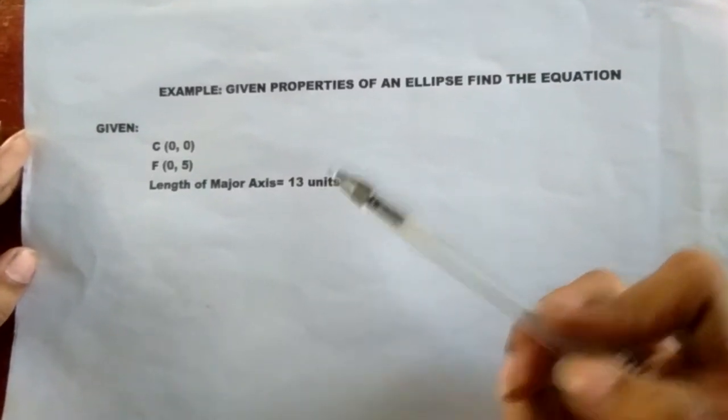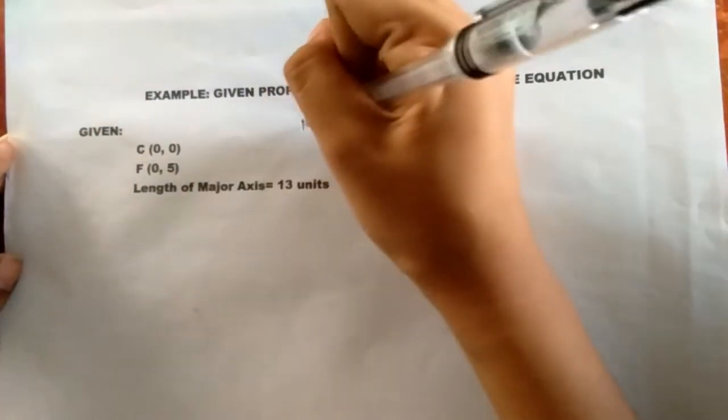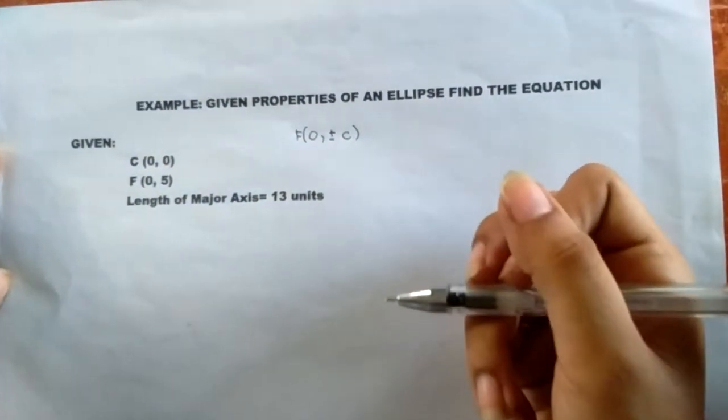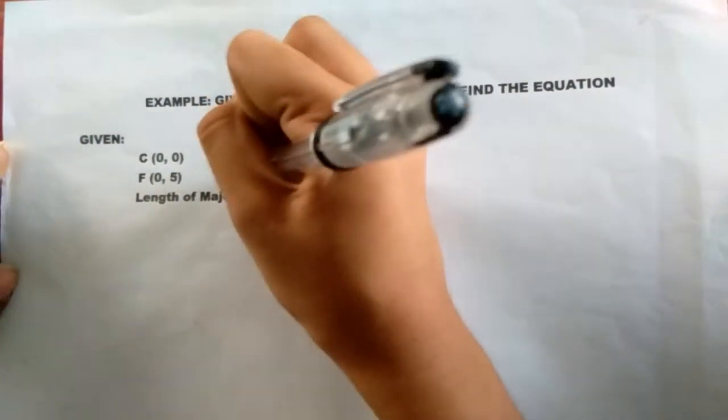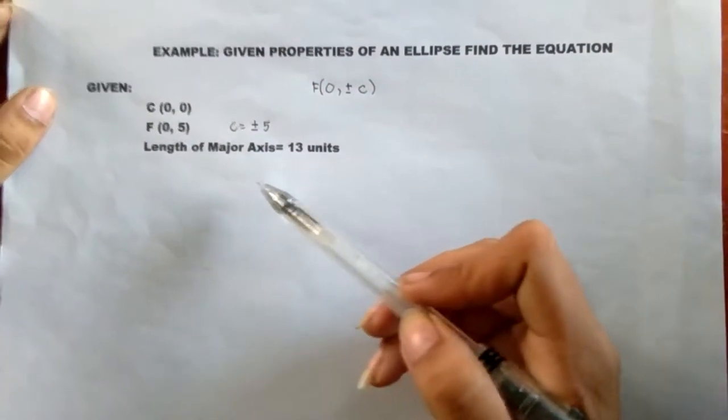Now, remember that this is an example of case 2, and the focus has (0, ±c). That means the measurement of our c is ±5. As you can remember, the length of the major axis is 2a.